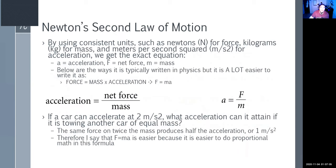Looking at the formula with consistent units — Newtons for force, kilograms for mass, and meters per second squared for acceleration. A is acceleration, F is net force, M is mass. It's typically written in physics as acceleration equals net force over mass, or A equals F over M.